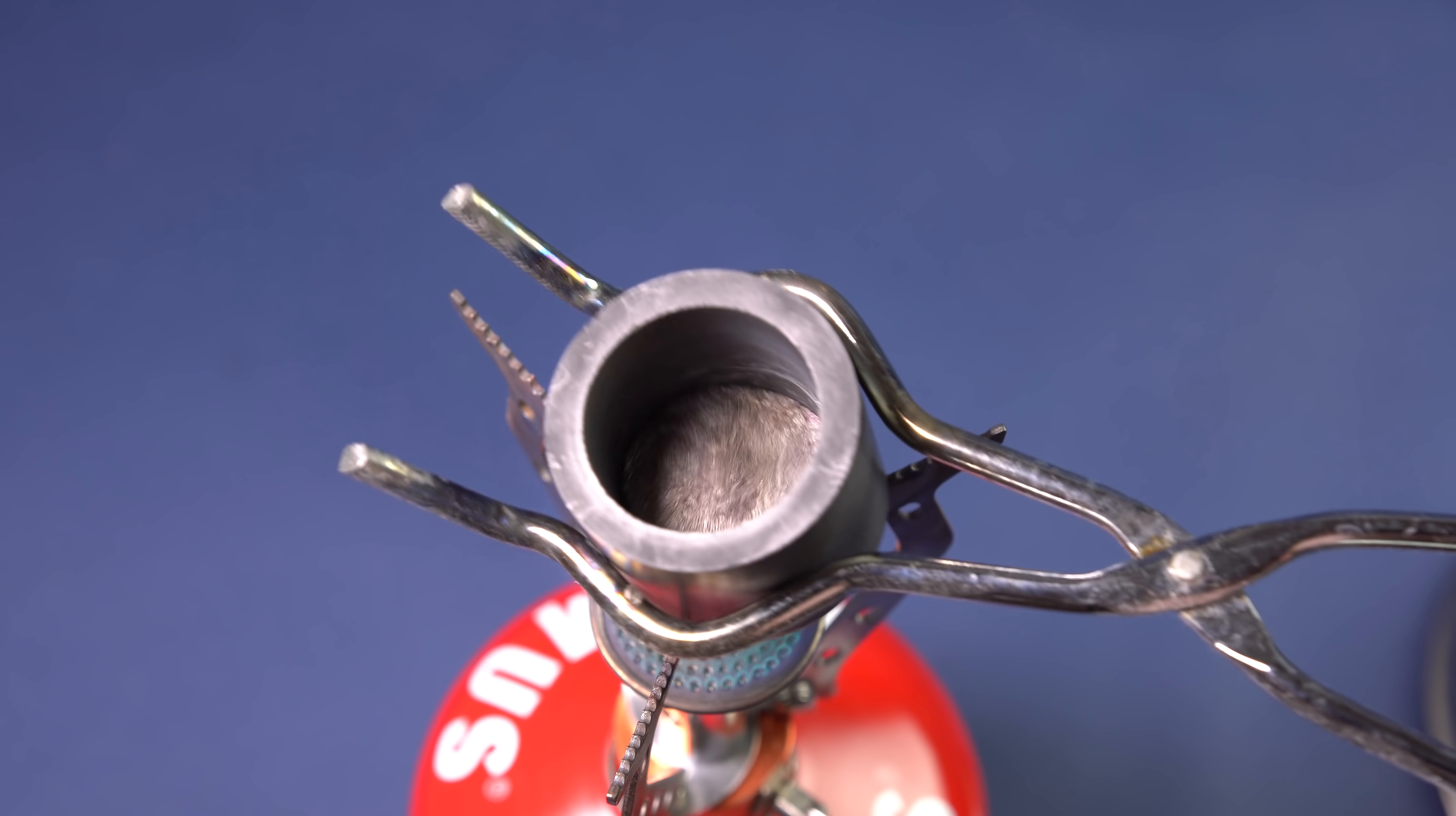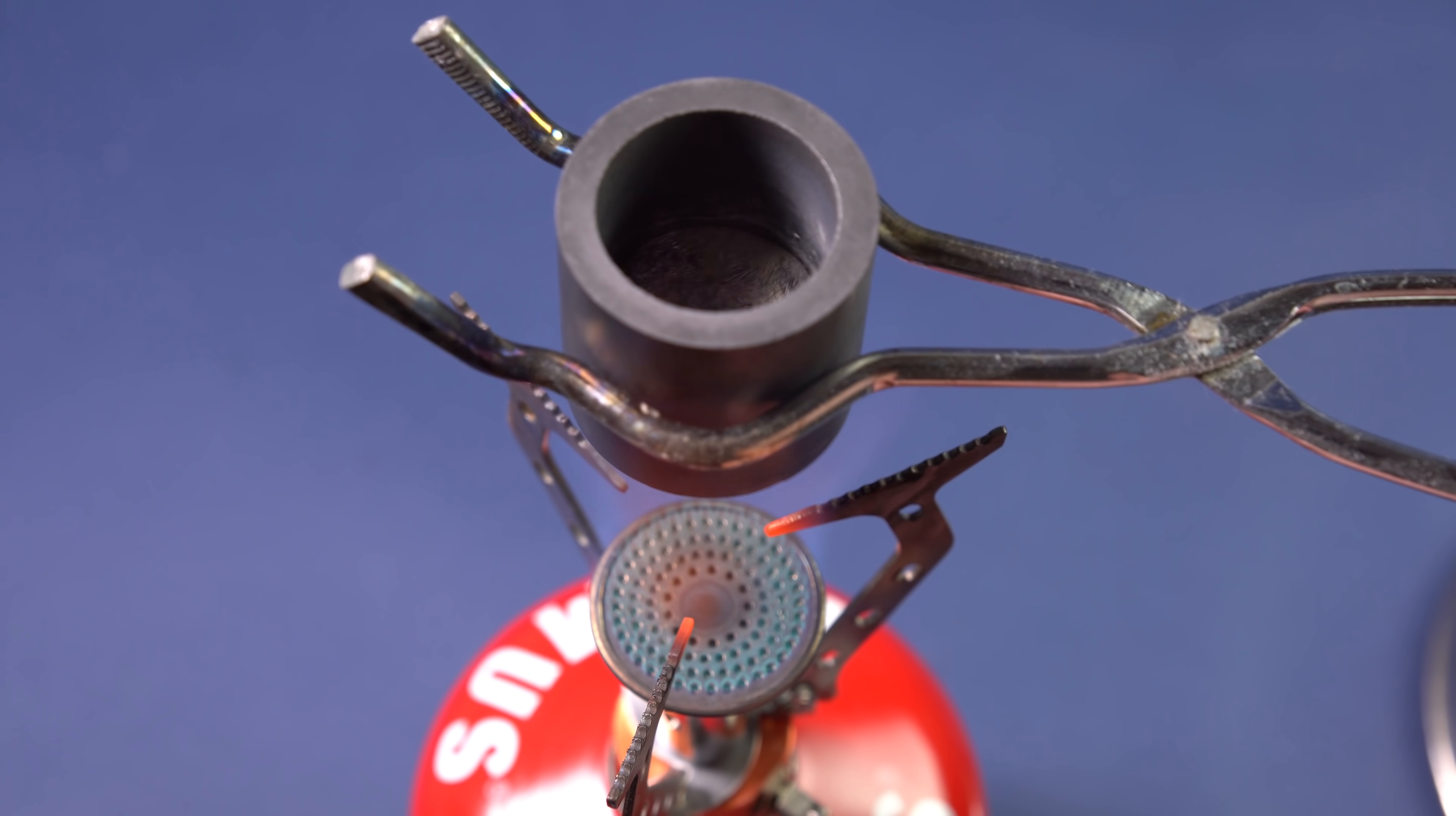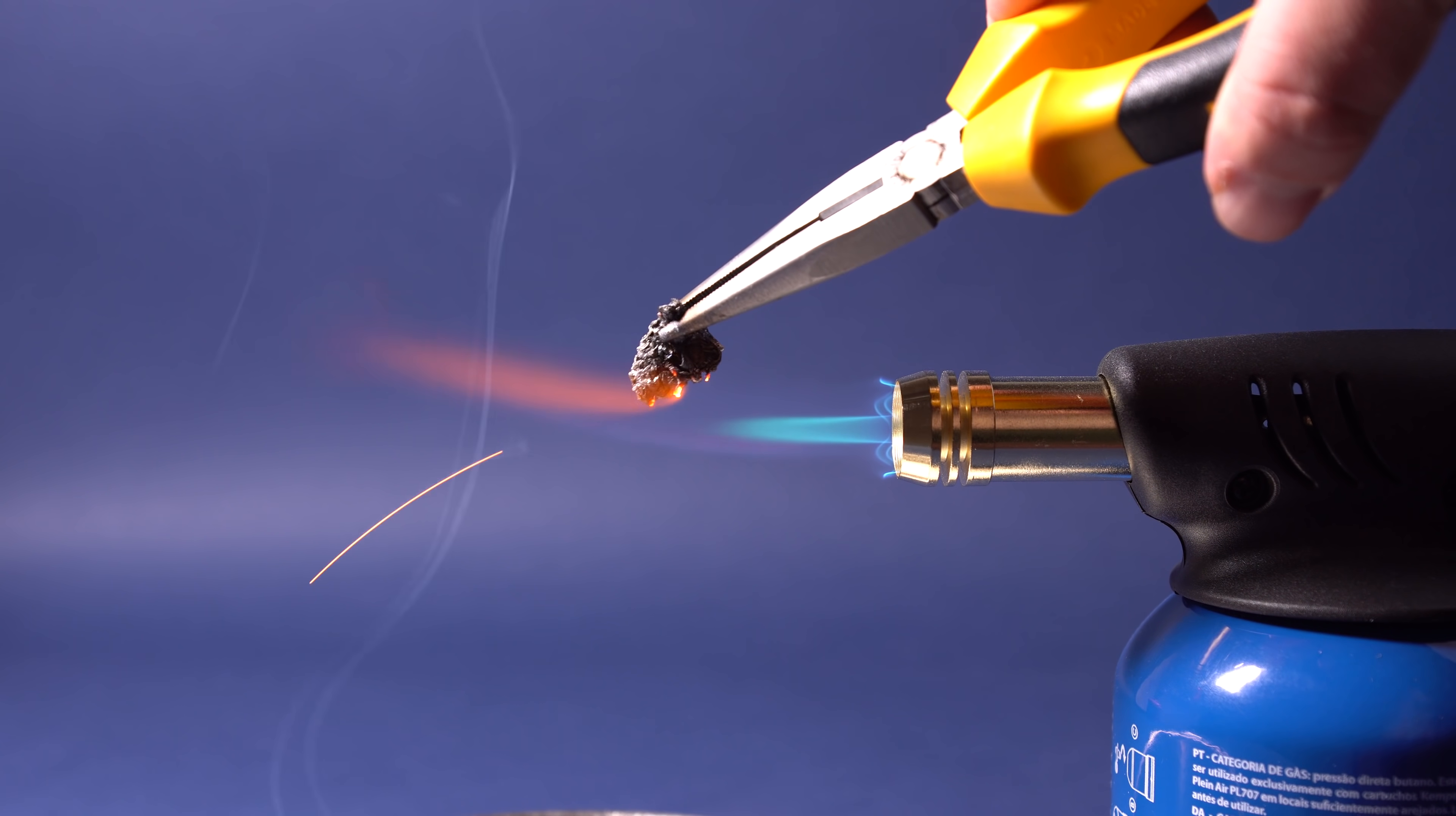At temperatures above 115 degrees Celsius, tin begins to gradually oxidize in air. But when it's heated to a temperature of about 1000 degrees Celsius, tin starts burning in air, forming tin dioxide.